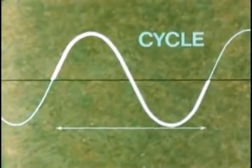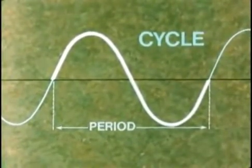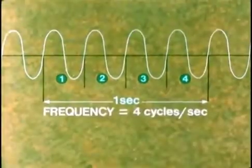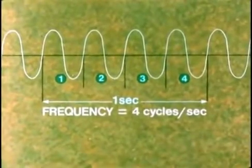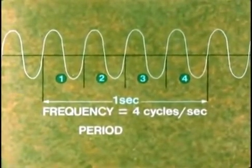The time taken for a cycle is called the period. If in one second four cycles have been completed, we say the AC has a frequency of four cycles per second. In this case, the period, the time taken for one cycle, is of course a quarter of a second.